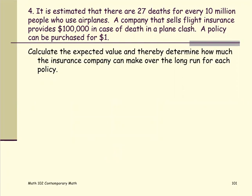In this problem, it is estimated that there are 27 deaths for every 10 million people who use airplanes. A company that sells flight insurance provides $100,000 in case of death in a plane crash, and a policy can be purchased for $1. We are going to calculate the expected value and determine how much the insurance company can make over the long run for each policy. Let's construct the table of information.